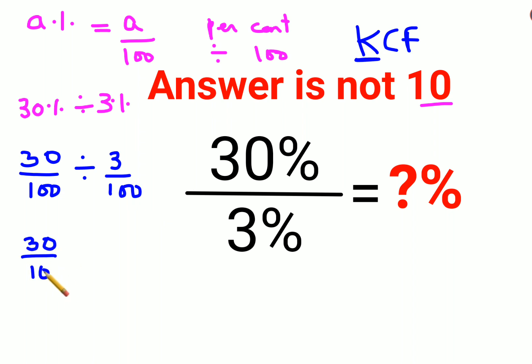C stands for changing the division sign to multiplication, and F stands for flipping or taking reciprocal of 3 upon 100, which is 100 upon 3. So now things are cancelling—this is ones and this is tens.